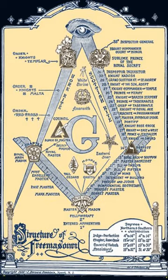Different Masonic jurisdictions vary in their relationships with Appendant Bodies, if any. Some offer formal recognition, while others consider them wholly outside of Freemasonry. This leads to some such bodies not being universally considered as Appendant Bodies, but rather separate organisations that happen to require Masonic affiliation for membership.